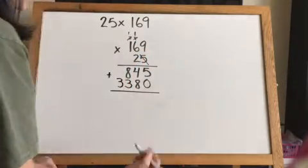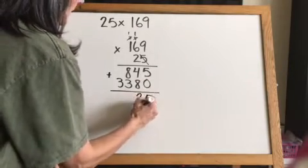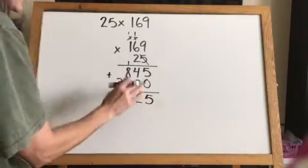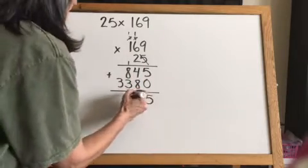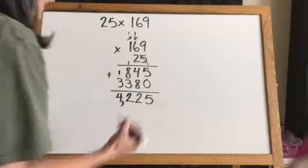Then everything underneath is what we're adding together. So 5 plus 0 is 5, 8 plus 4 is 12, carry the 1. 8 plus 1 is 9 plus 3, we're still going to teach the kids to look for tens. There's not a 10, but there's an 11, so 8 plus 3 is 11 plus 1 is 12, carry the 1, and 3 plus 1 is 4. And there's your answer.